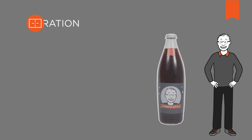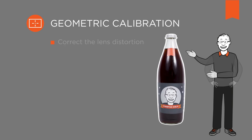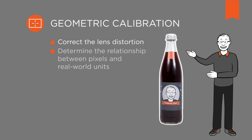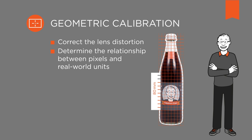With geometric calibration, we correct the lens distortion. Furthermore, we can also determine the relationship between the camera's natural units — meaning pixels — and real-world units like millimeters or inches, for example.